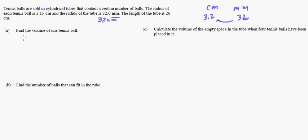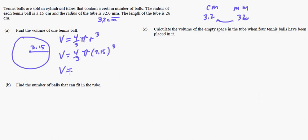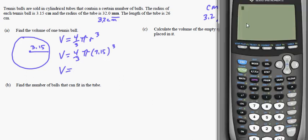Now, it says find the volume of one tennis ball. Well if you think about it, a tennis ball is obviously three-dimensional, and the radius is 3.15 here. So just look in your formula booklet, you find the volume of a sphere is four-thirds pi times the radius cubed. So I'm going to just do volume equals four-thirds pi times 3.15 cubed, and all you have to do is enter that into your calculator.